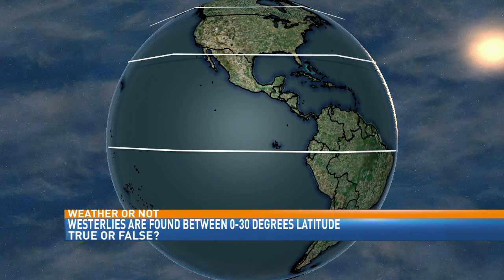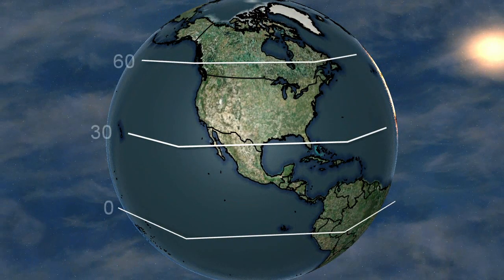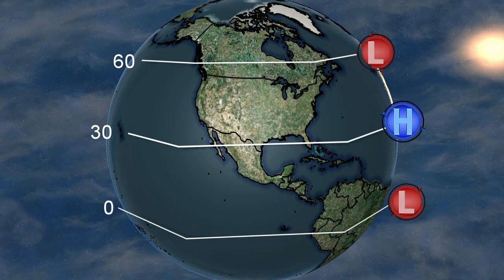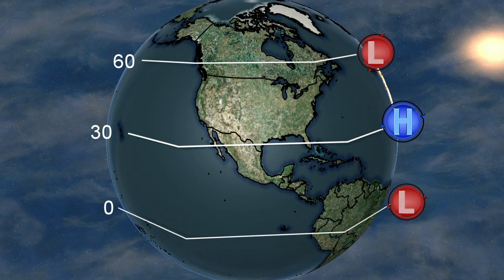So the westerlies are basically our jet stream. Let's pull up the weather graphic — I drew some pictures to help explain. That bottom line is the equator, then we have 30 degrees north and 60 degrees north. Based on the heating of our atmosphere and the way the sun hits the Earth at different angles, we have large areas of low pressure at different areas in the atmosphere. That subtropical high is a large area of high pressure that we generally see in the 30-degree latitude range.